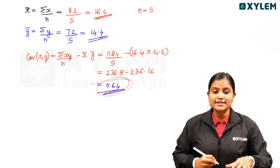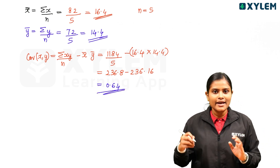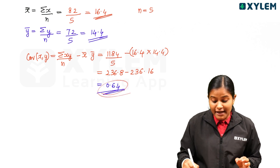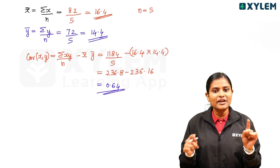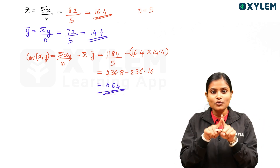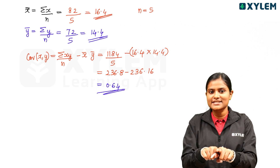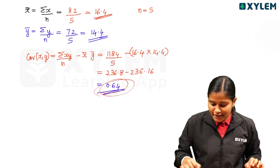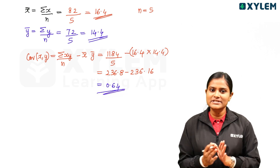The answer is 0.64, which is positive. So the covariance is positive, meaning the X and Y variables move in the same direction.